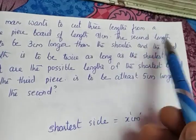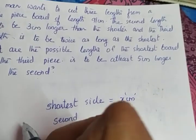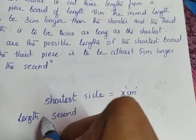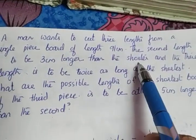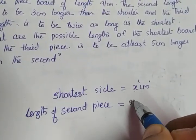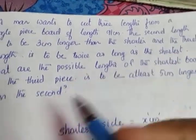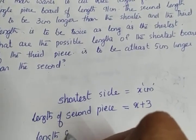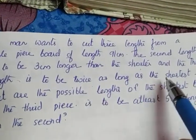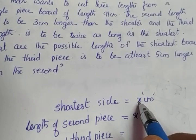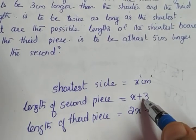From the first condition, the second length is to be 3 cm longer than the shortest. So the length of the second piece is x plus 3. From the next condition, the third length is to be twice as long as the shortest. So the length of the third piece is 2x. We now have all three lengths: x, x plus 3, and 2x.